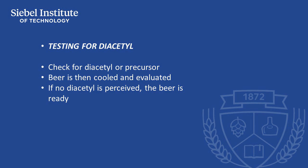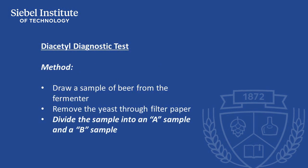If diacetyl is perceived, it's important to know whether it is diacetyl or precursor, as the remedy for the two compounds is different. For the diacetyl diagnostic test, we need to draw a sample of beer from the fermenter and remove the yeast by filtering it through filter paper. We then divide the sample into an A sample and a B sample.